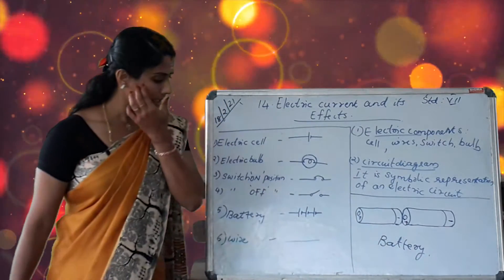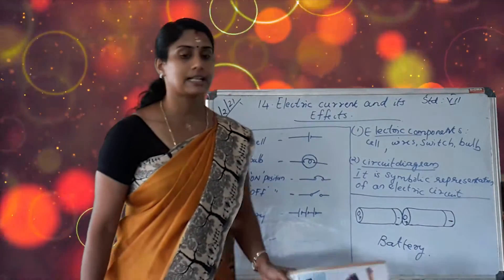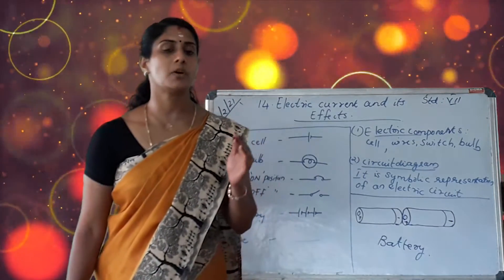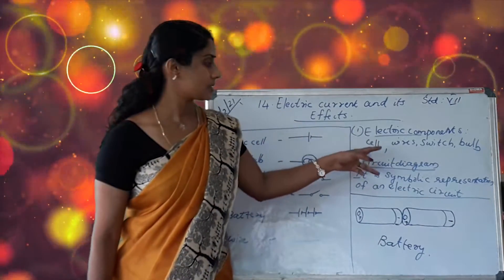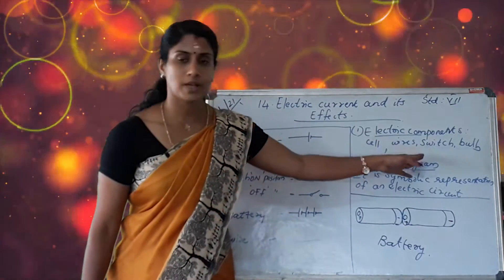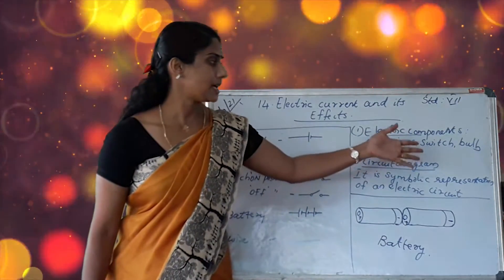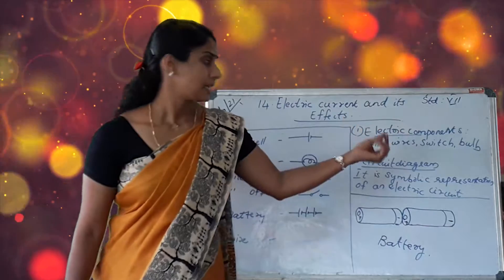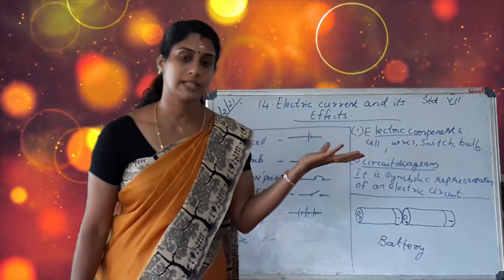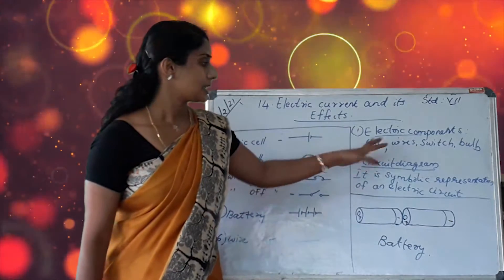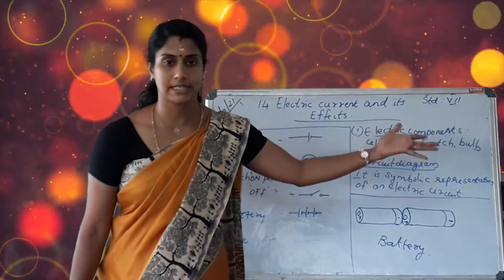Next we study electric components used in electrical circuits. The components are: cell, wire, switch, bulb, and battery. These are names we are very familiar with from our daily life.